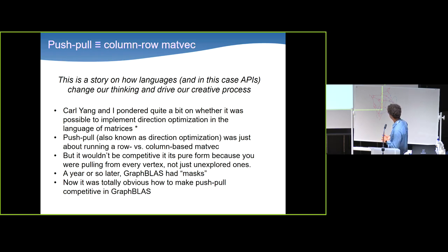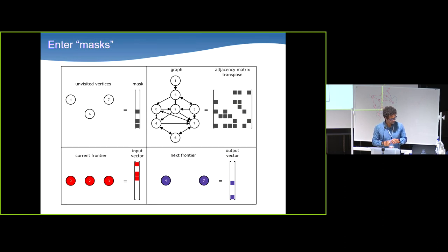And then people, of course, expanded this idea to other graph computations because it's not just breadth-first search. This routine of traversing the graph is used in every other graph algorithm on Earth. So the general name for it is push-pull sometimes. Some people call it direction optimization. But the motivation of this came from looking at the graph and thinking about it. Instead, you would discover the same algorithm if we had this primitive called sparse matrix vector multiply with a mask.